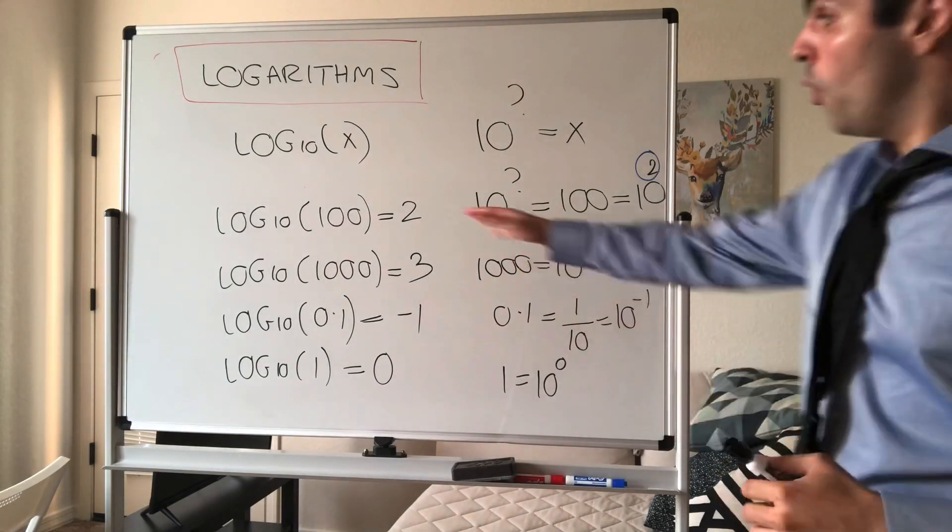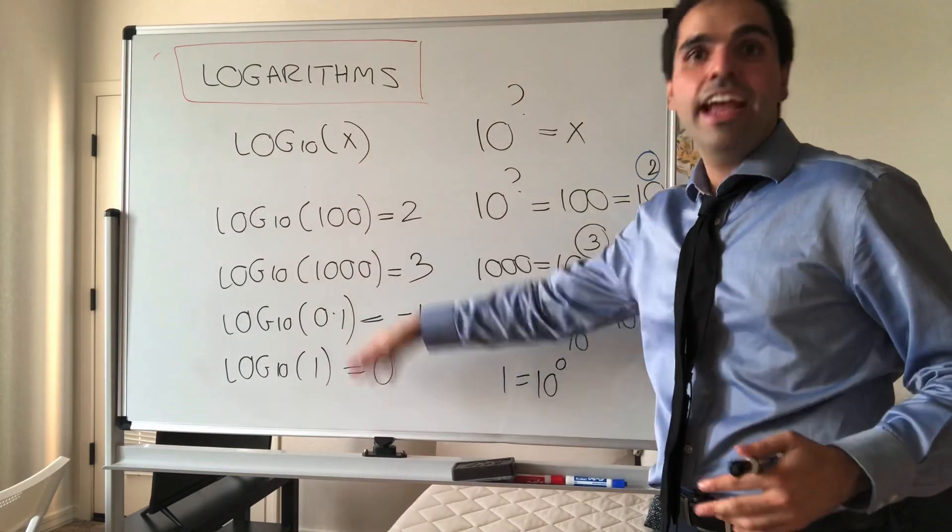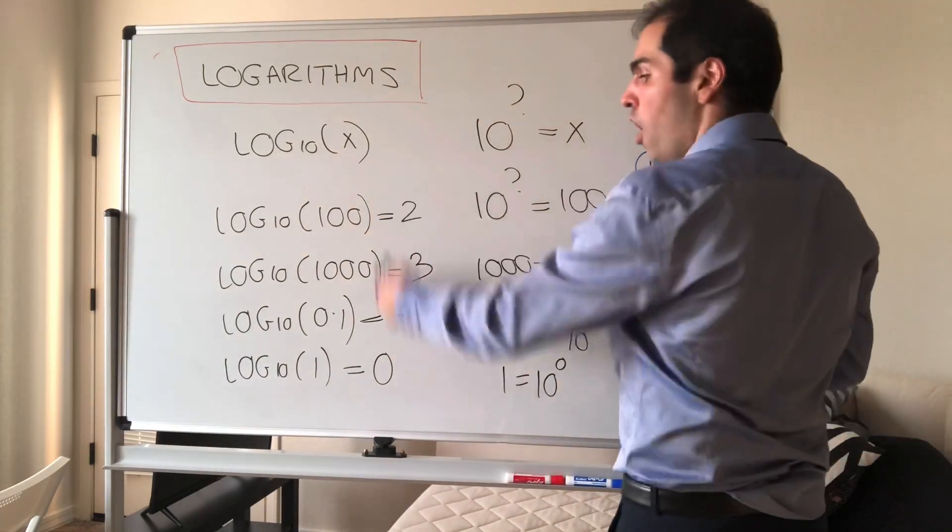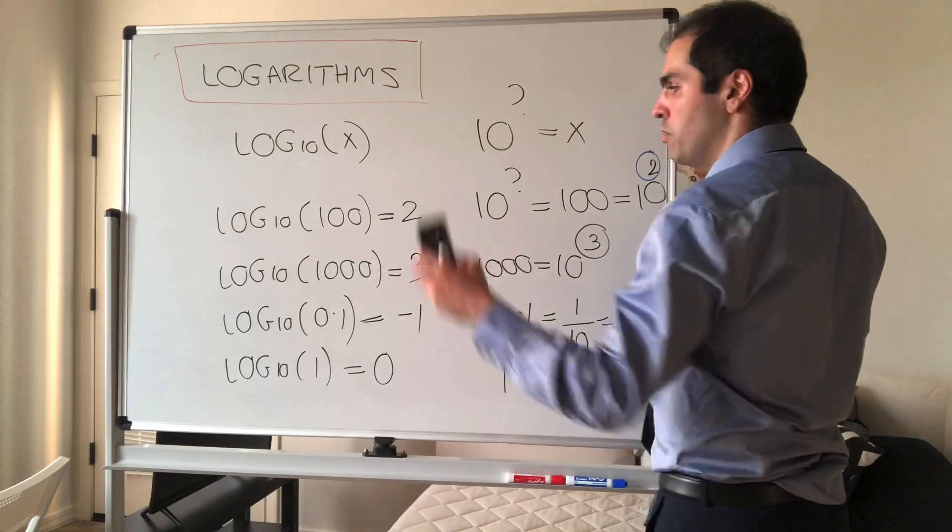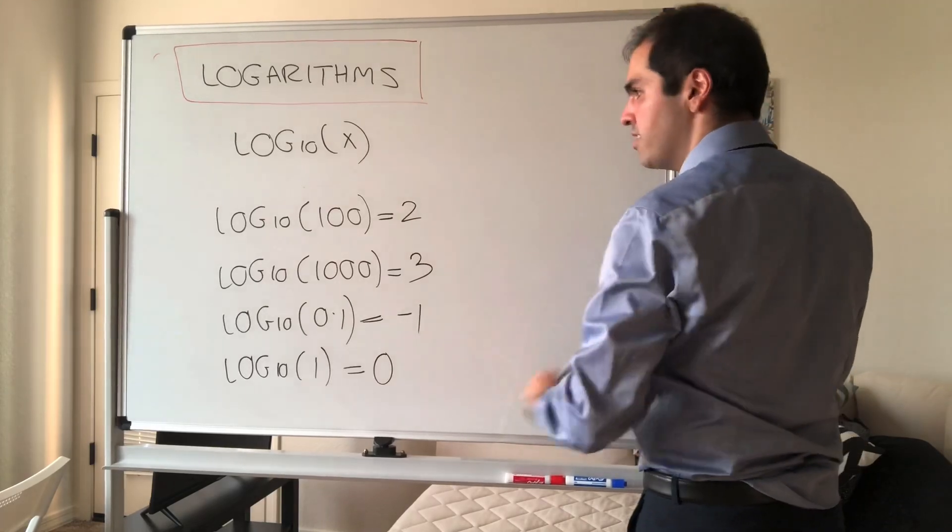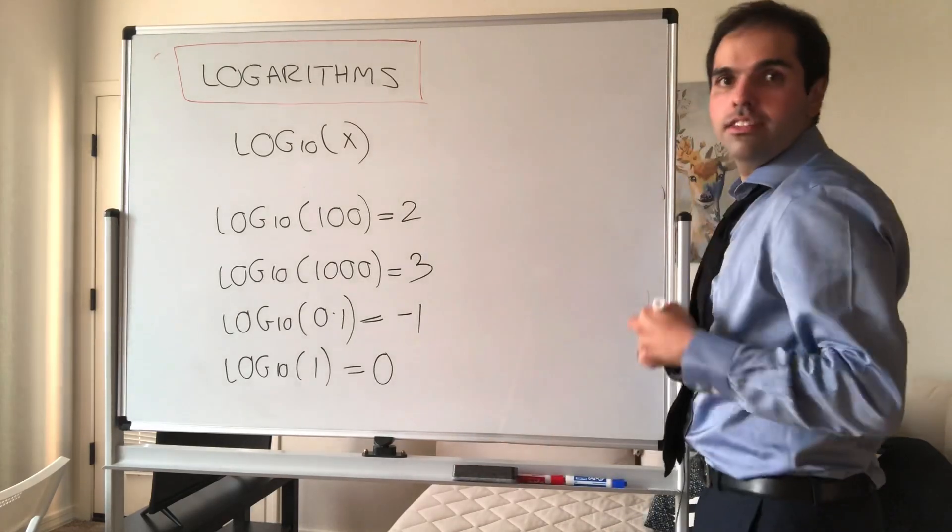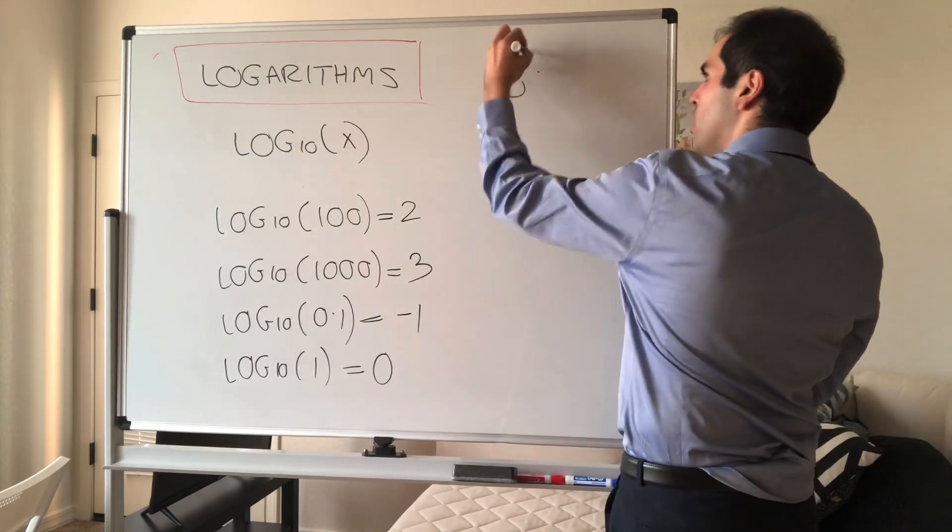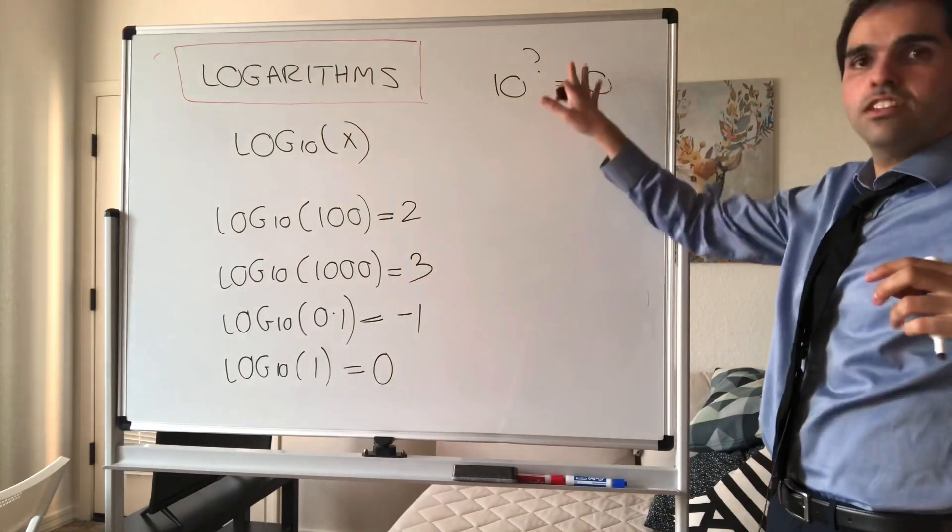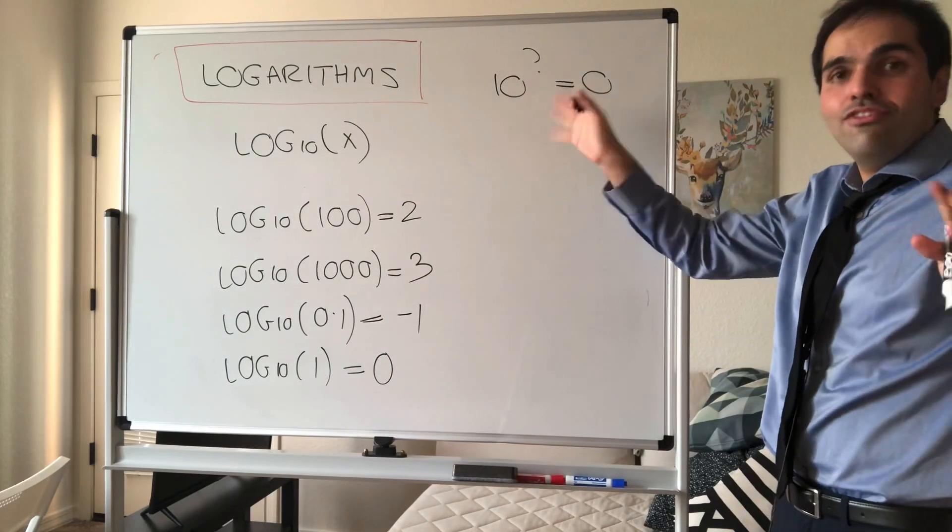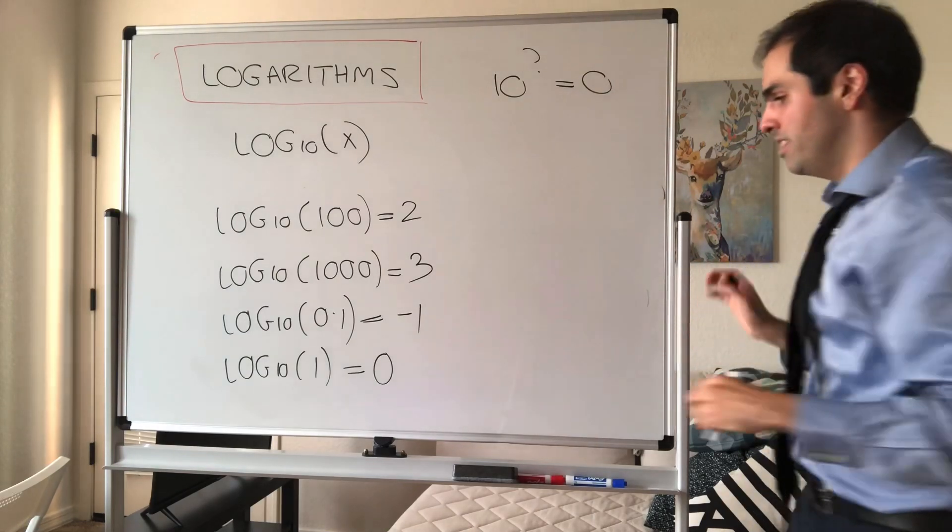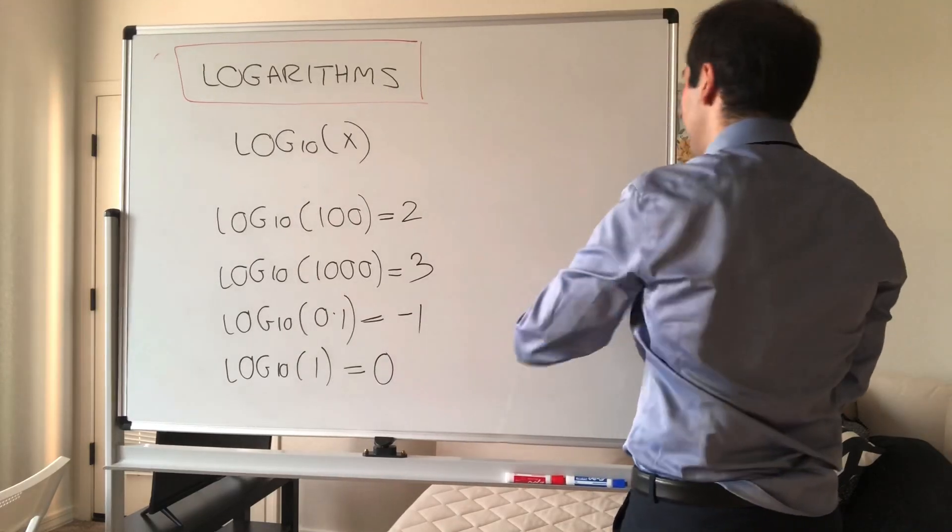You can already notice the range of log is all the numbers. It could have negative numbers, 0, 2, 3, etc. However, interestingly, what's the domain? Could 10 to something be 0? Well, not really. 10 to something is always positive, so the domain of log base 10 is all the positive numbers.